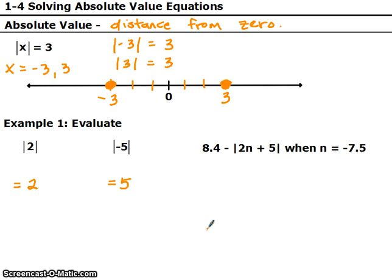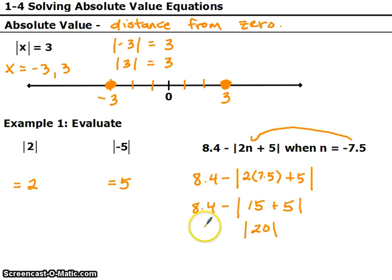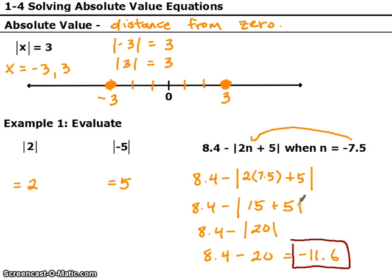All right, if I give you 8.4 minus the absolute value of 2n plus five, a little more complicated, but I tell you n is equal to negative 7.5, so you're going to plug that in there. So, this is 8.4 minus 2 times negative 7.5 plus five, inside the absolute value. So 2 times negative 7.5, that's negative 15, plus 5, that's negative 10. But after we take the absolute value, it becomes positive 20. So, this ends up being 8.4 minus 20, which is negative 11.6. So you can get negative answers on some of these problems once the absolute value is gone. Just keep your head on straight and make sure anything inside the absolute value will become positive when it goes outside the absolute value.